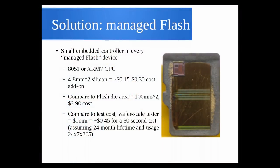Compare that to the die area of the flash — about 100 square millimeters, roughly three dollars cost. It's a minor cost add. If you were to test at wafer scale using a high-end wafer probe testing station costing about a million dollars, and it takes 30 seconds to test, the amortization of that tester alone for those 30 seconds costs you about 45 cents. So economically, putting a small controller on every die and using it to help run tests actually makes sense.